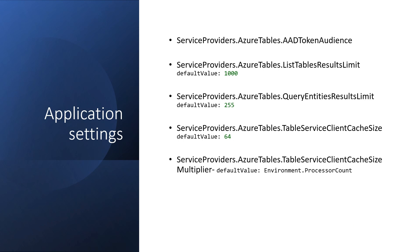These are some configurations which can be modified through app settings for the table storage connector. It is not recommended to modify them unless really required, and it's better to test the performance if you are increasing any of the limits. The AAD token audience setting — by default, AAD authentication uses the table service endpoint as the audience, but if you're using a custom domain for the storage account, you can provide the audience through this app setting. The list table results limit is set to 1000 and can be modified. Query entity results limit is set to 255 — you can use pagination through continuation token or modify the setting. Client cache size is set to 64, and client cache size multiplier is set to the processor count by default. Both can also be modified through app settings.